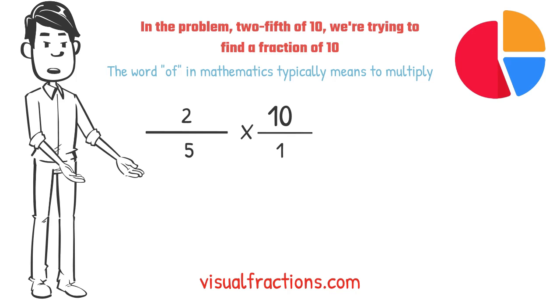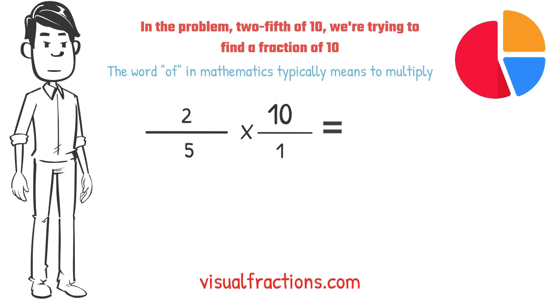Now, we proceed to multiply across. First, multiply the numerators, 2 times 10 equals 20. Next, multiply the denominators, 1 times 5 equals 5.